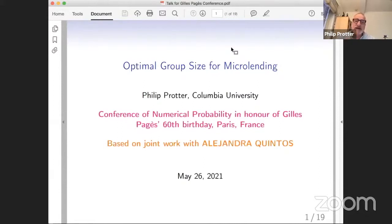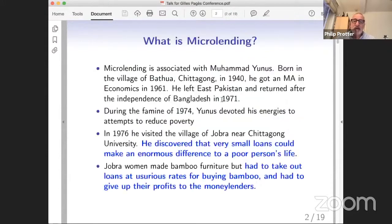The title is Optimal Group Size for Microlending. First of all, I don't think I can assume that everybody knows what microlending is, so I'll explain it a little bit.